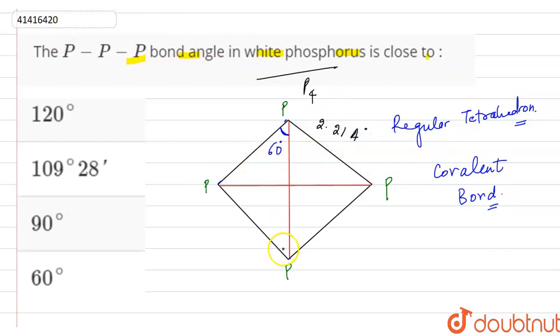And the P-P-P bond angle is 60 degrees. So atomicity is P4. So here we have the bond angle. How much is it? 60 degrees between P, P and P.